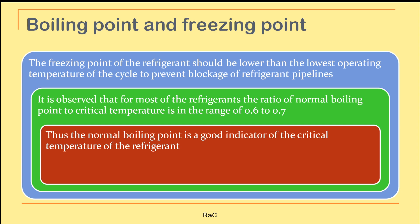It is observed that for most refrigerants, the ratio of the normal boiling point to the critical temperature is in the range of 0.6 to 0.7, meaning the normal boiling point is a good indicator of the critical temperature of the refrigerant.